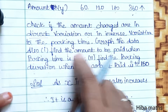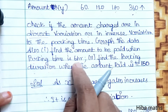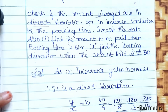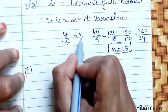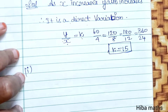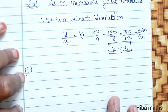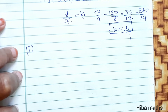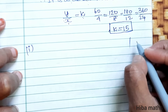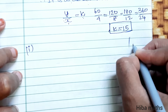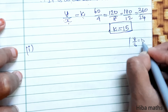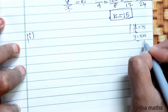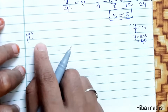First question: find the amount to be paid when parking time is 6 hours. Time is the x value and k equals 15. So y equals 15 into 6, which gives 90. The answer to the first part is 90 rupees.